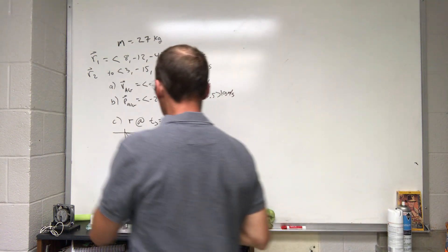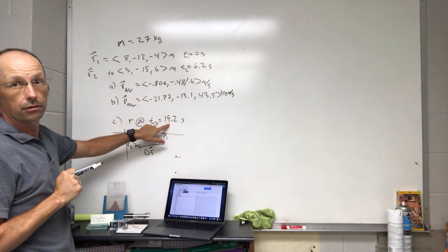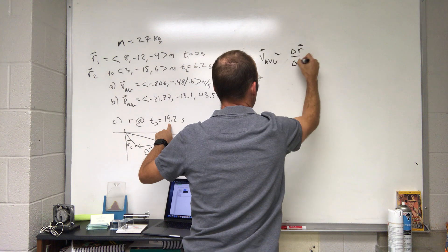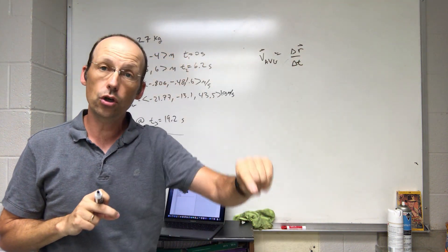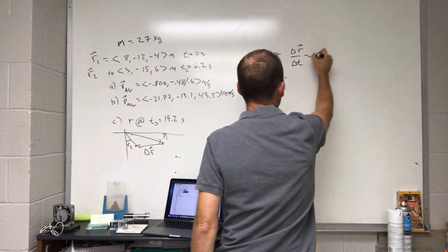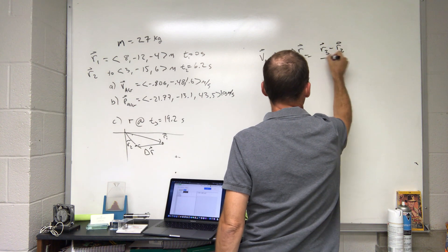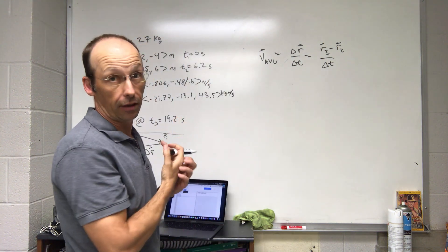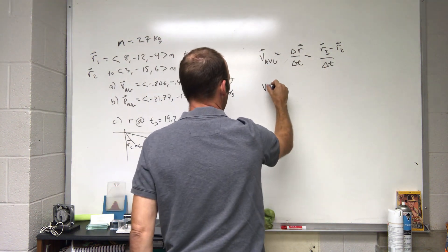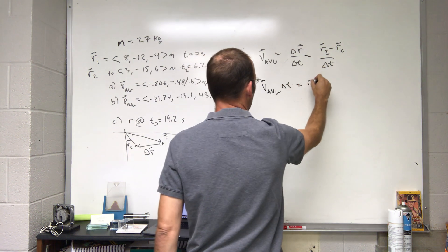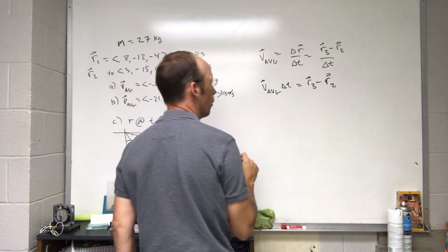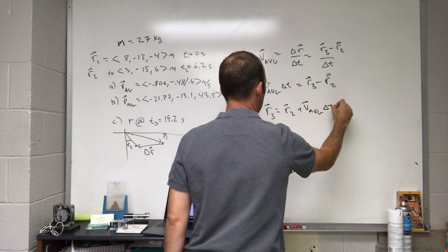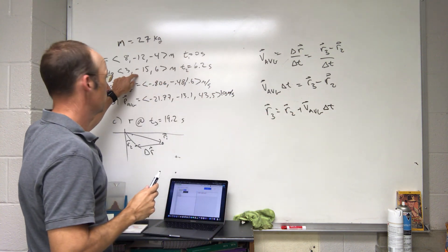Now for the last part: where will it be at 19.2 seconds? Here I can do this: average velocity equals delta r over delta t. Now let's think about going from time 2 to time 3. I could say this is equal to r3 minus r2. They said assume it has the same velocity throughout that time, so what would be the position at r3? If I multiply both sides by delta t, I get v average times delta t equals r3 minus r2. If I add r2 to both sides, I get r3 equals r2 plus v average times delta t.